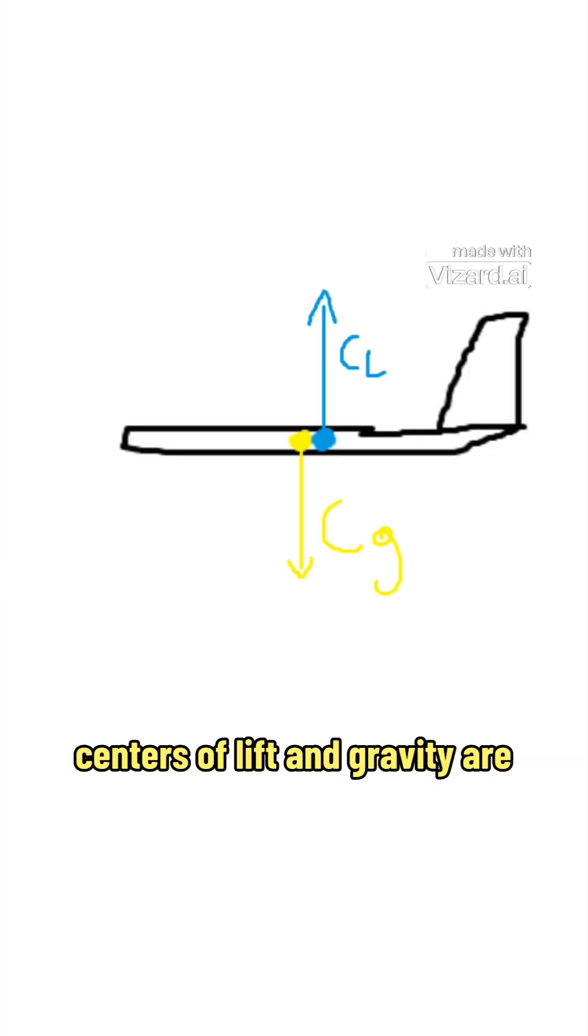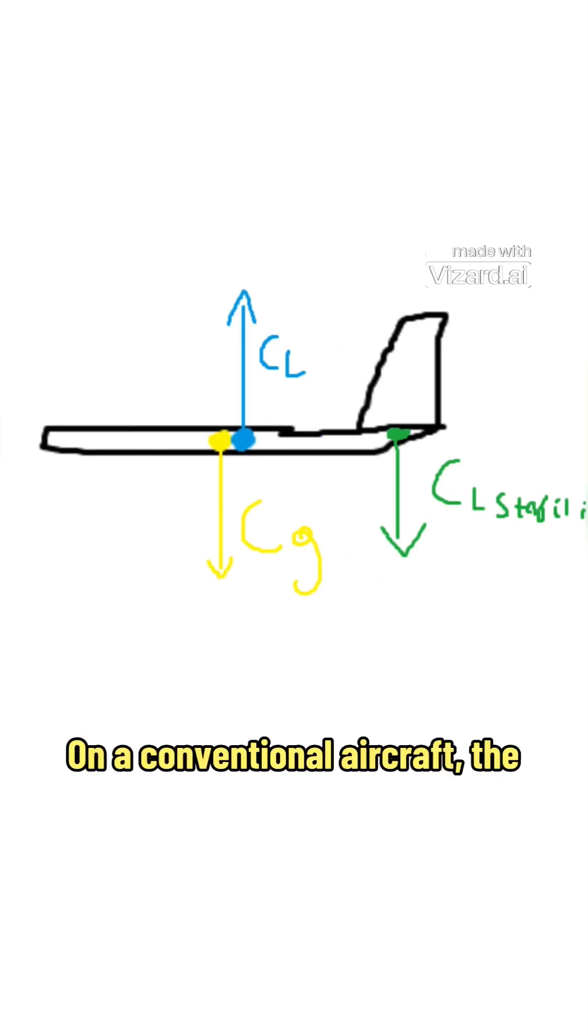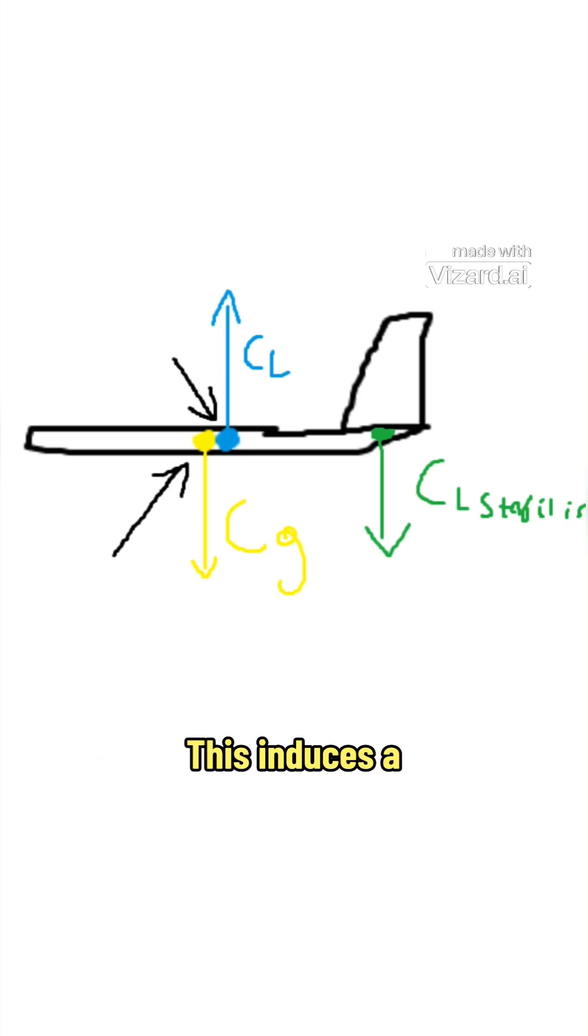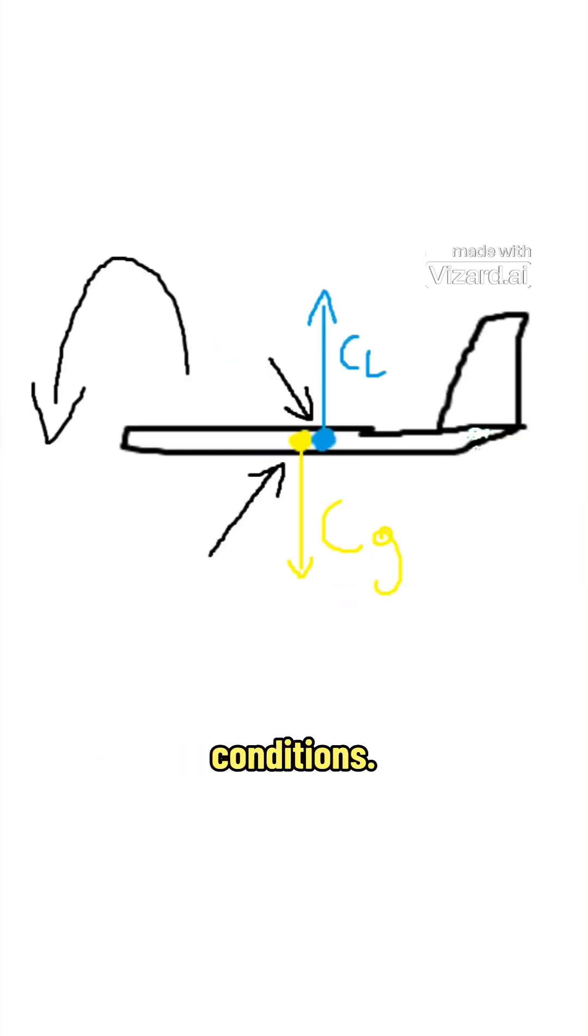This is because of how the centers of lift and gravity are positioned on the airplane, along with a correcting stabilizer. On a conventional aircraft, the center of mass is just slightly ahead of the center of lift. This induces a counterclockwise rolling moment in normal flight conditions.